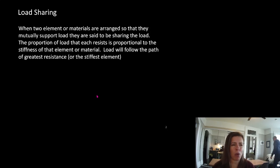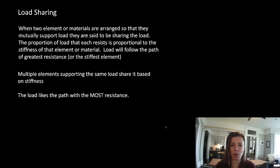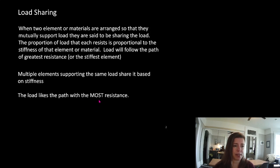Multiple elements supporting the same load share it based on stiffness. What makes up stiffness? We know that E — the modulus of elasticity — is something there because that was our stiffness measure. But area can also impact how stiff something is. If we had a beam in bending and wanted to make it stiffer, we could make it deeper — we've added material. So there's some combination of E and area, and the load likes the path with most resistance.